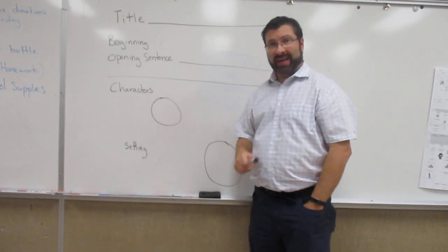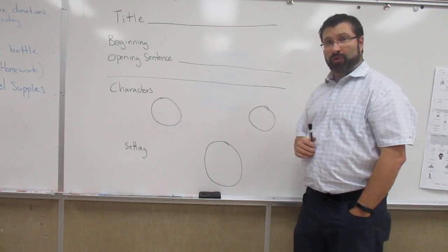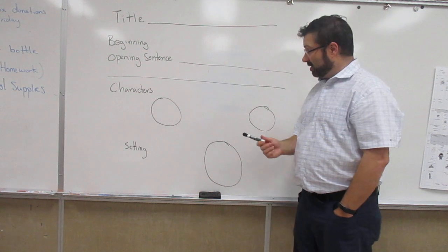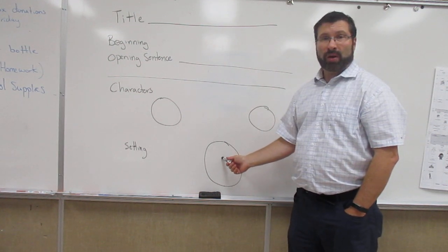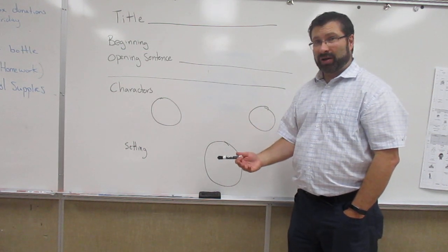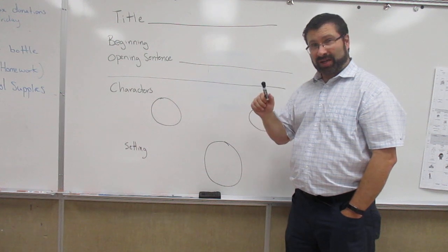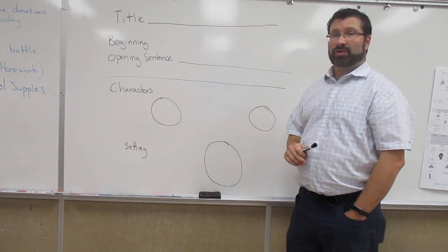And the antagonist, the bad guy or the force that's trying to stop the good guy, that's going to go in this circle. And of course, the setting, where and when this is happening, will go in this circle. The circles are kind of small. If you can't fit everything in there, you can just kind of go past it over the edges. It doesn't matter. It's just to help you organize your story.